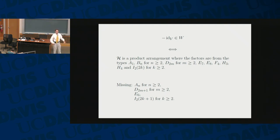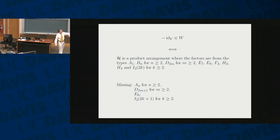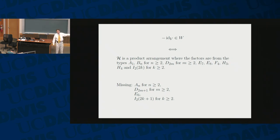It says that the arrangement is a product arrangement of all the following factors — it's a long list, so it's better to look at what's not in the list. Type A for dimensions 2 and higher is not there. Type D in all dimensions is not there. E6 is not there. And the odd dihedral arrangements are not there.